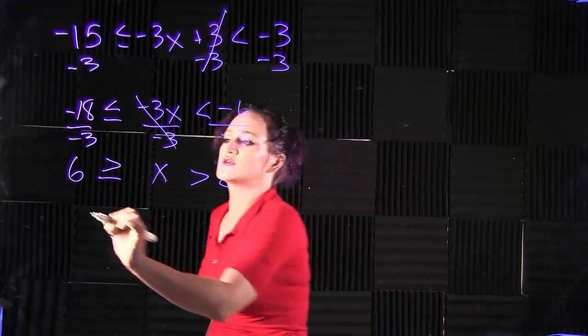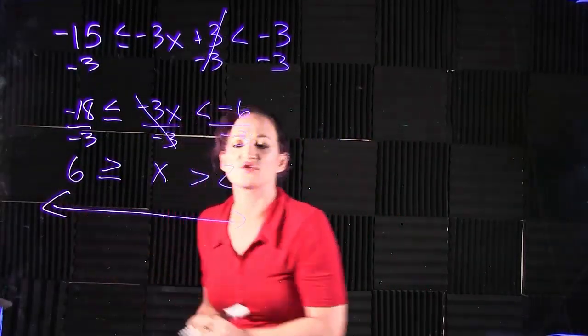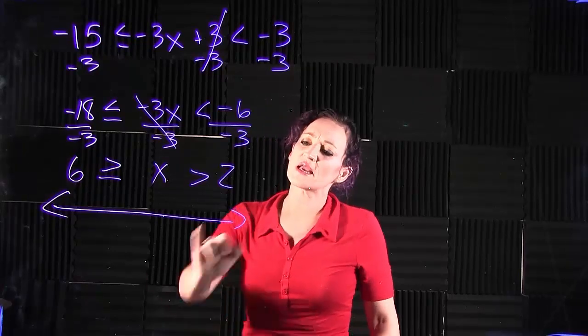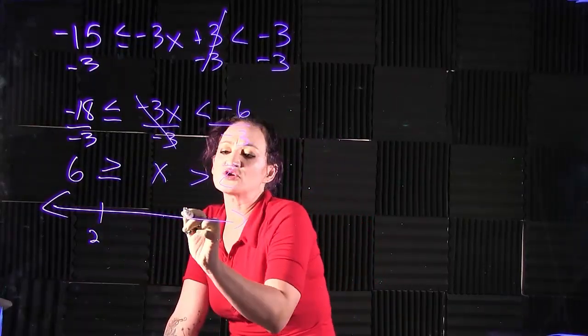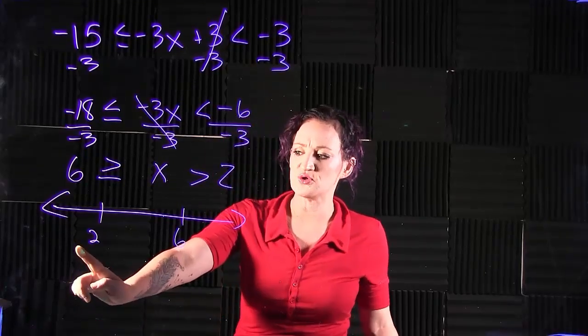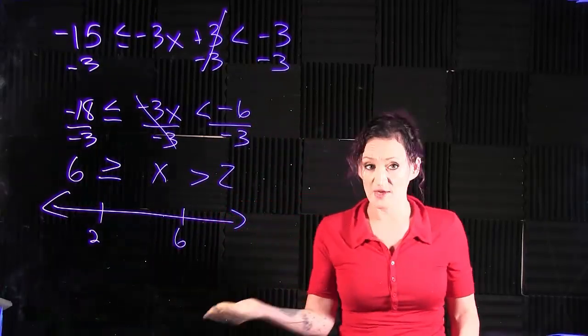When it comes to inequalities, we need to graph and write our answer in interval notation. So we are looking at the numbers 2 and we are looking at the number 6. Make sure that they are in proper order with 2 on the left, 6 on the right, smallest to biggest.